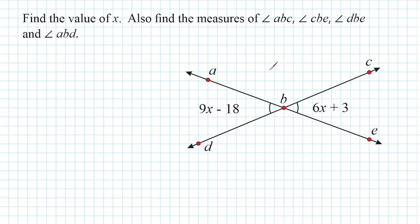The first thing we want to take note of is that angle ABD and angle CBE are vertical angles, and that means they are going to have congruent angle measures. So that means this expression should be set equal to this expression.